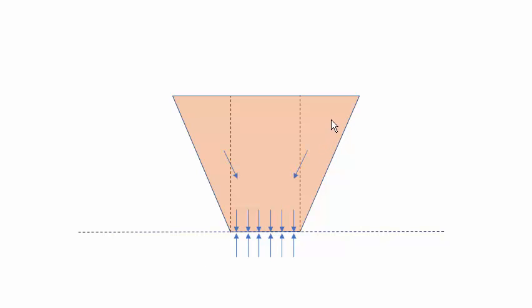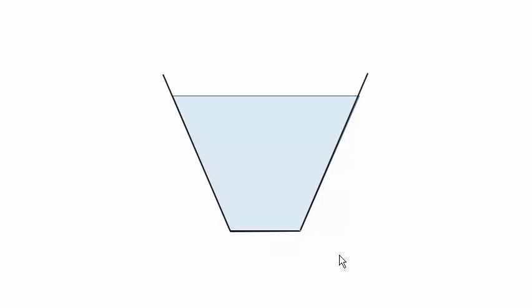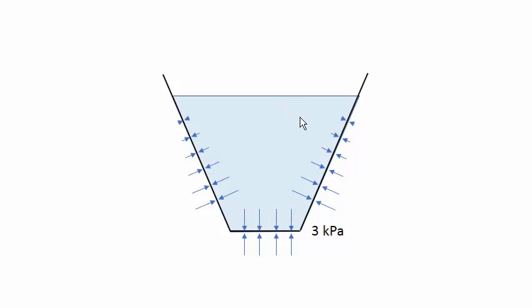That's because the only counterbalancing force for a wooden block is at the bottom — the weight is transmitted through the block to the bottom. But water is different. It cannot transmit forces through itself other than pressure, because it has no strength.